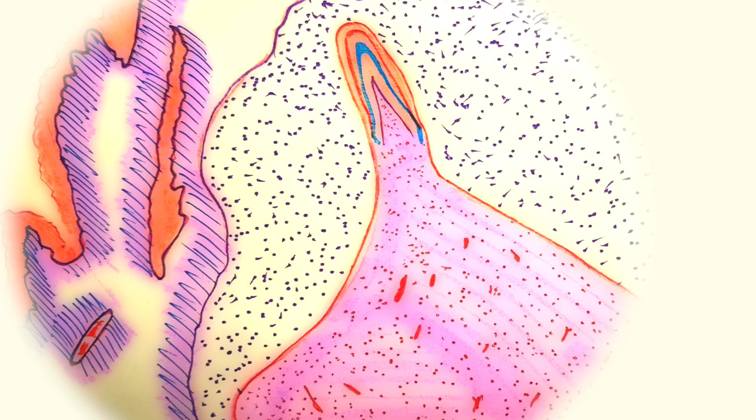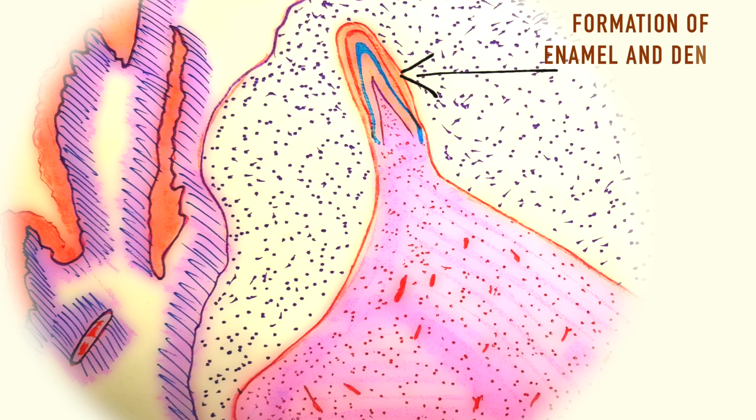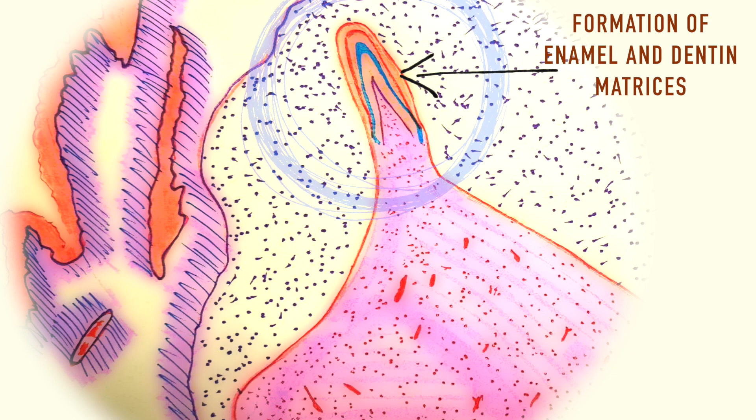With the final shape of the tooth in place, the next stage, the appositional stage, presents the formation of the enamel, dentin, and cementum matrices that are partly calcified and serve as a framework for future calcification.